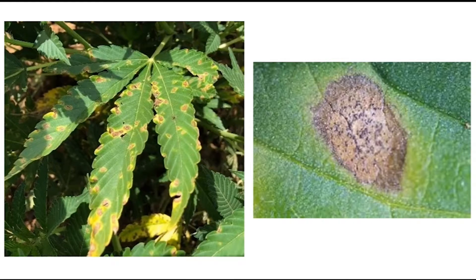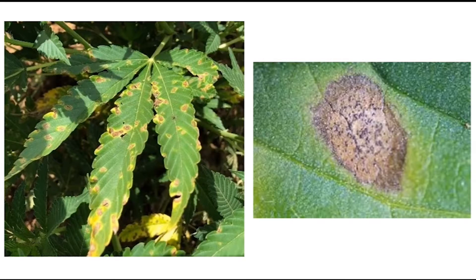bipolaris leaf spot, and cercospora leaf spot. This prominent yellow halo is unique to septoria leaf spot and can really help you differentiate it from the three major leaf spots.